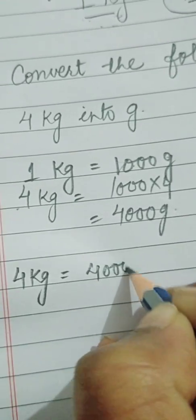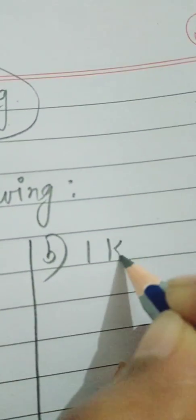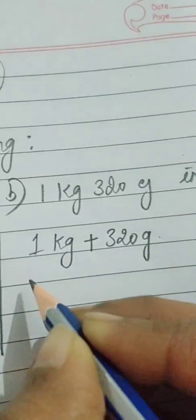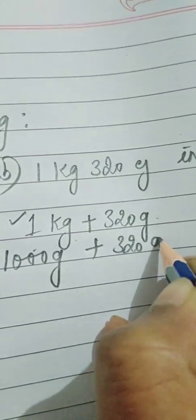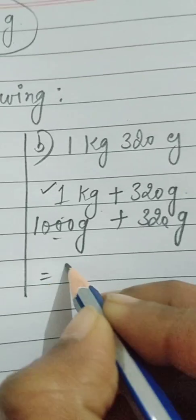Part B: 1 kilogram 320 grams into grams. We write 1 kilogram plus 320 grams. As we know, 1 kilogram means 1000 grams, so 1000 grams plus 320 grams. When we add these we get 1320 grams.